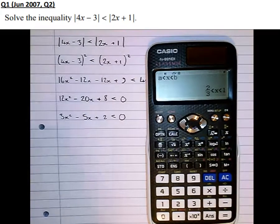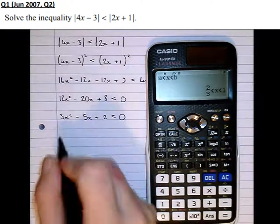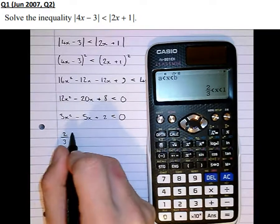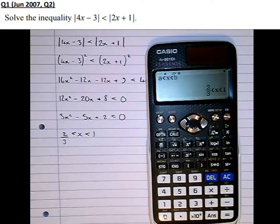And we get the answer there, 2 thirds is less than x is less than 1. 2 thirds less than x less than 1. And that there is quadratic inequalities involving the modulus sign.